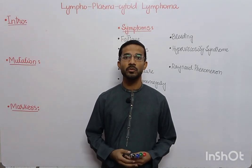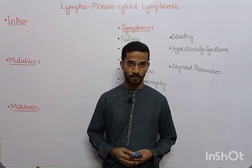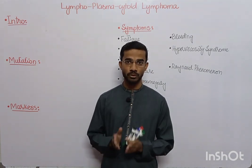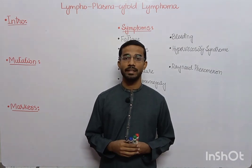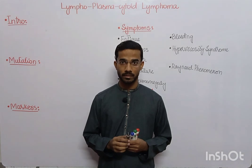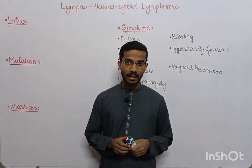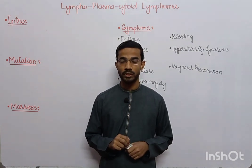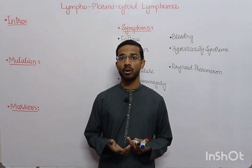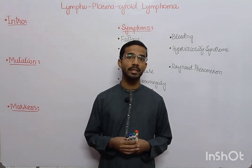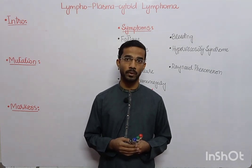Welcome to Medlacto. Today we are going to discuss lymphoplasmacytic lymphoma. In this lymphoma, lymphocytes and plasma cells are produced excessively. Several monoclonal antibodies are produced which are IgM in nature. Normally in our blood, polyclonal antibodies are present, but in this lymphoma, monoclonal IgM antibodies will start producing.